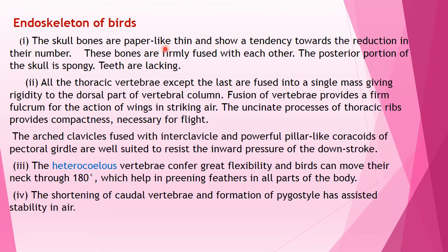The skull bones are paper-like thin and reduced in number; they are firmly fused with each other, and the posterior portion of the skull is spongy in nature. Teeth are completely absent in birds. All thoracic vertebrae except the last are fused into a single mass, giving rigidity to the dorsal part of the vertebral column. This fusion provides a firm fulcrum for the action of the wings in striking the air, and the uncinate processes of the thoracic ribs provide the compactness necessary for flight.